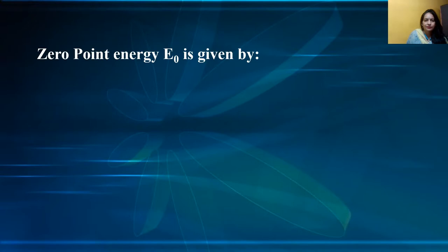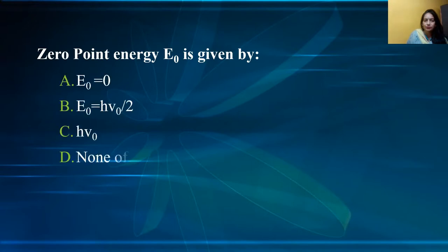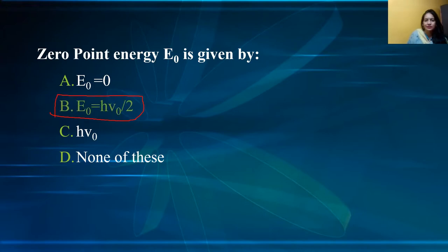Next question: zero point energy E₀ is given by — E = 0, E₀ = hν₀ half, hν half, or none. Using the expression E_ν = (ν + ½)hν₀ and setting ν = 0, we get E₀ = ½hν₀. So option B is the correct option.